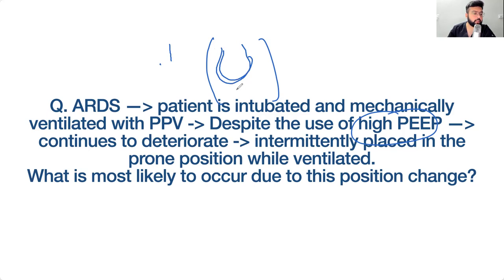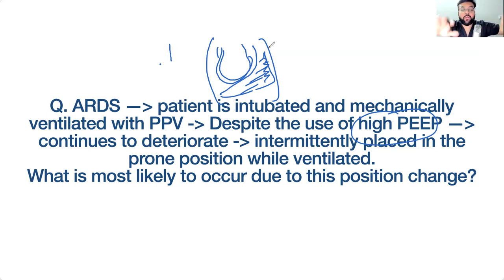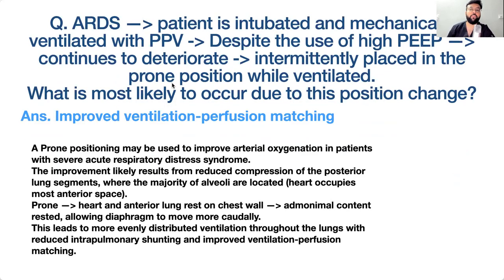Anteriorly, the heart and major vessels occupy the mediastinum. When the patient lies supine, the heart and chest wall compress the posterior lungs. When placed prone, the heart and vessels rest on the anterior chest wall, freeing the posterior lung to expand and open up. This improves oxygenation and V/Q ratio. Prone positioning is preferred for ARDS patients.